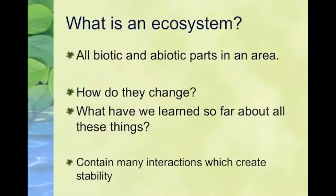To start off, let's review what an ecosystem is. An ecosystem is all the biotic and abiotic things in an area. So if you look at Dug Pond ecosystem, it is all of the organisms that live in Dug Pond, as well as the pH, temperature, and amount of wind in the area.